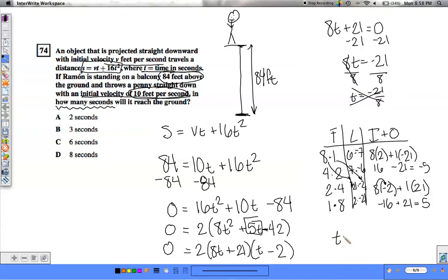Our only other option is setting t minus 2 equal to 0, and this is a positive number. If we check it out, we see that A is 2 seconds.